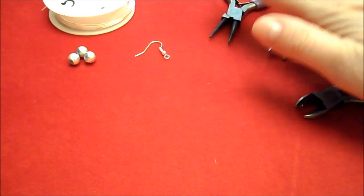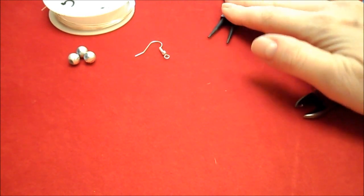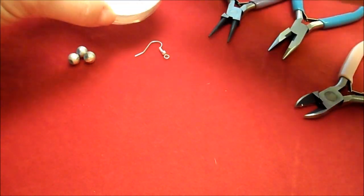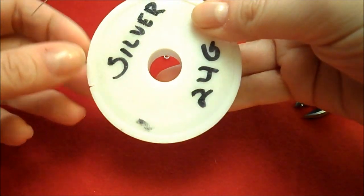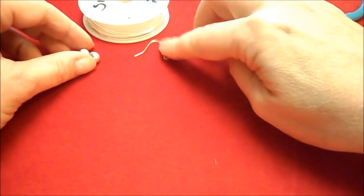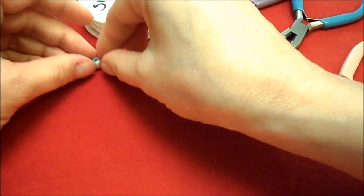and your round nose pliers if you decide not to use the jump ring. You'll need some wire. I'm using silver 24 gauge. You'll need your earring hooks and you'll need 3 beads.